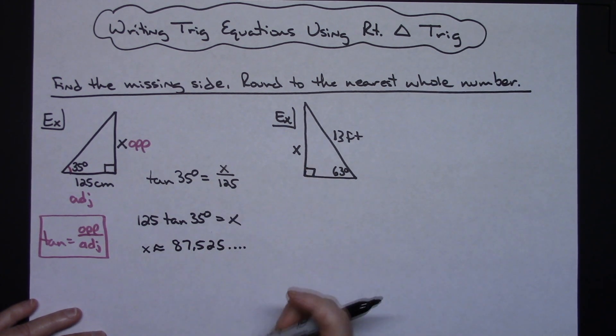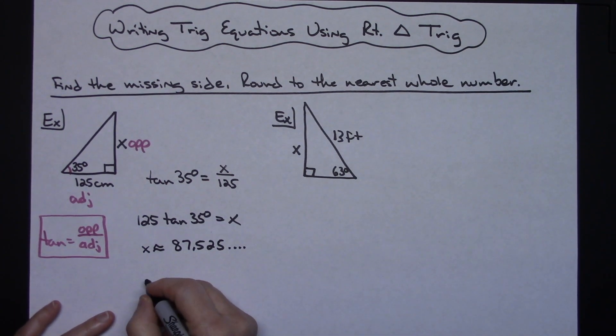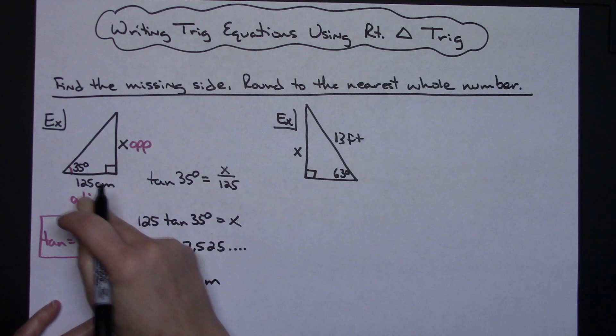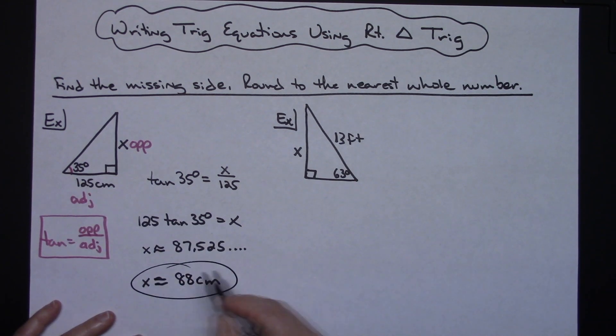Make sure your calculator is in degree mode. You might want to pause the video and see if you can get that number. Since it says round to the nearest whole number, X is approximately equal to 88 centimeters.